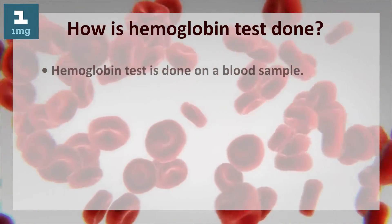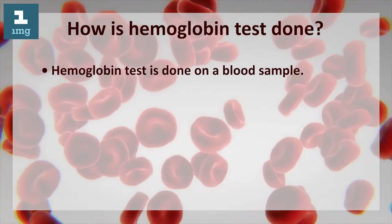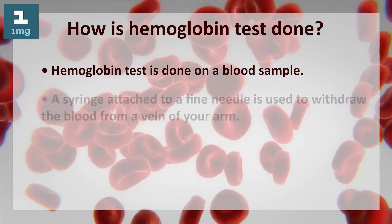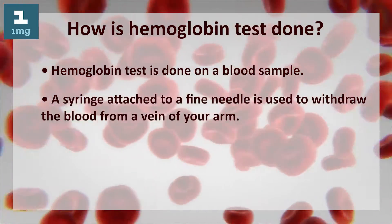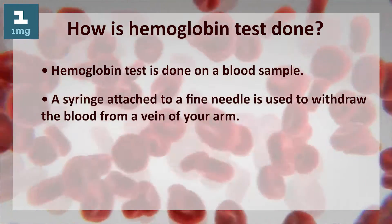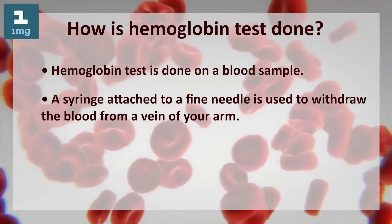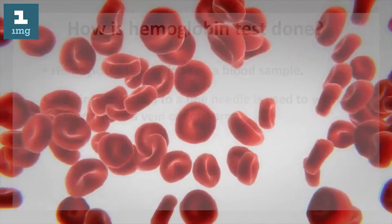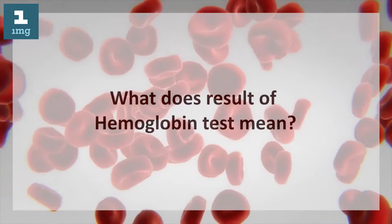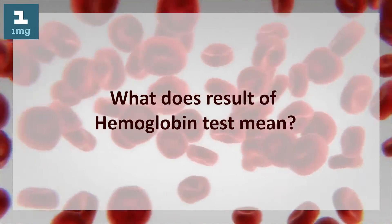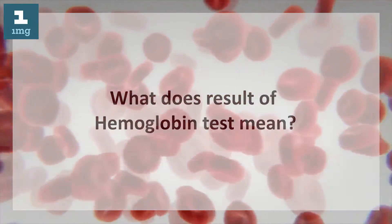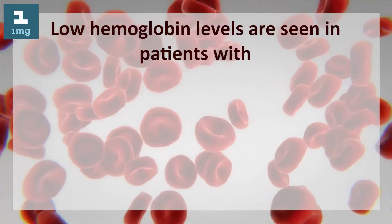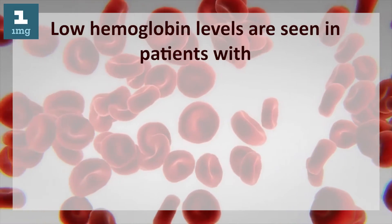How is the hemoglobin test done? The hemoglobin test is done on a blood sample. A syringe attached to a fine needle is used to withdraw blood from a vein in your arm.